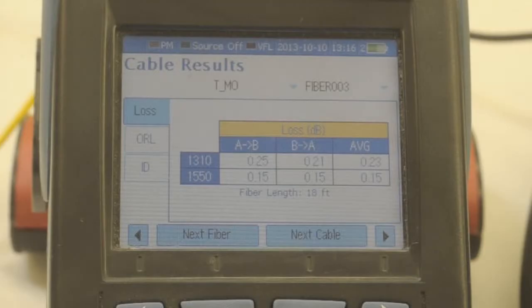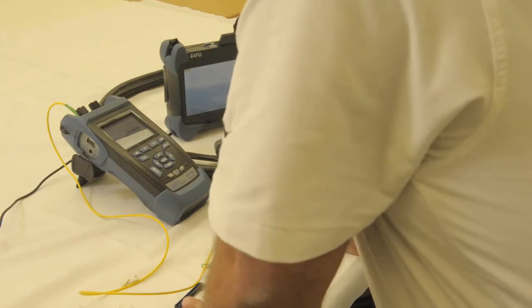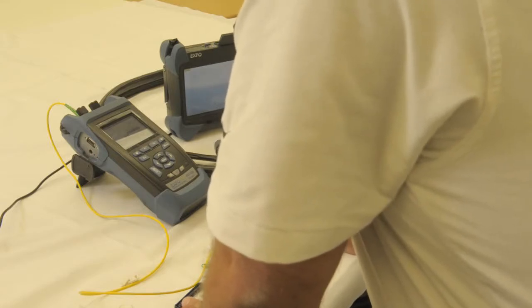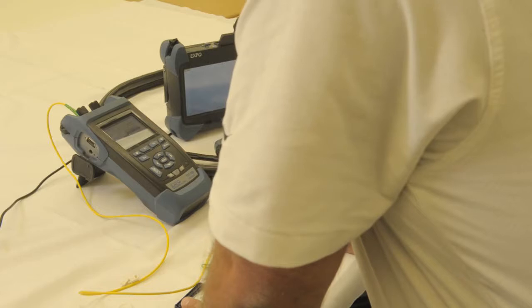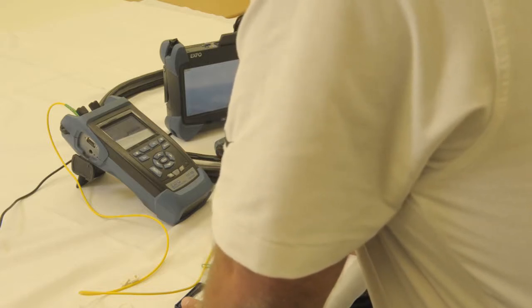We'll check our results. At 1310 from A to B is 0.25, from B to A is 0.21. At 1550 it's 0.15 A to B and B to A is also 0.15. We'll check our return loss: at 1310 from A to B is 53.31, from B to A is 53.72. At 1550 A to B is 54.89 and from B to A is 54.66.